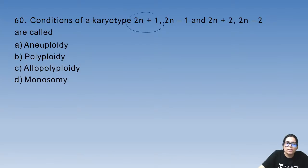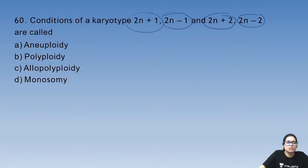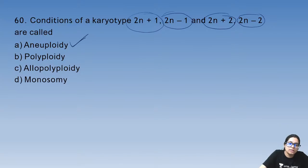Question 60: conditions of karyotype 2N+1, 2N-1, 2N+2, 2N-2 are called aneuploidy.